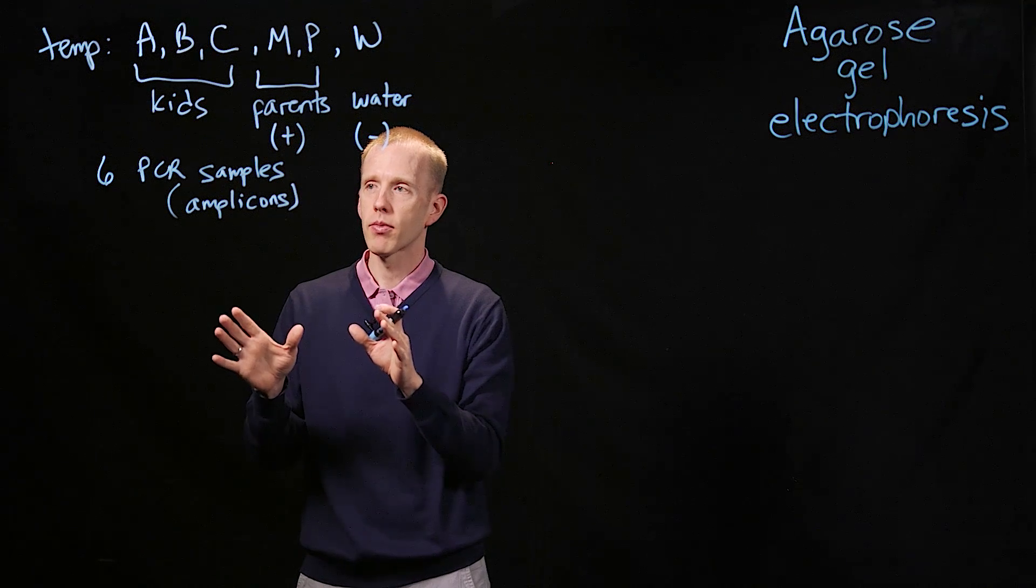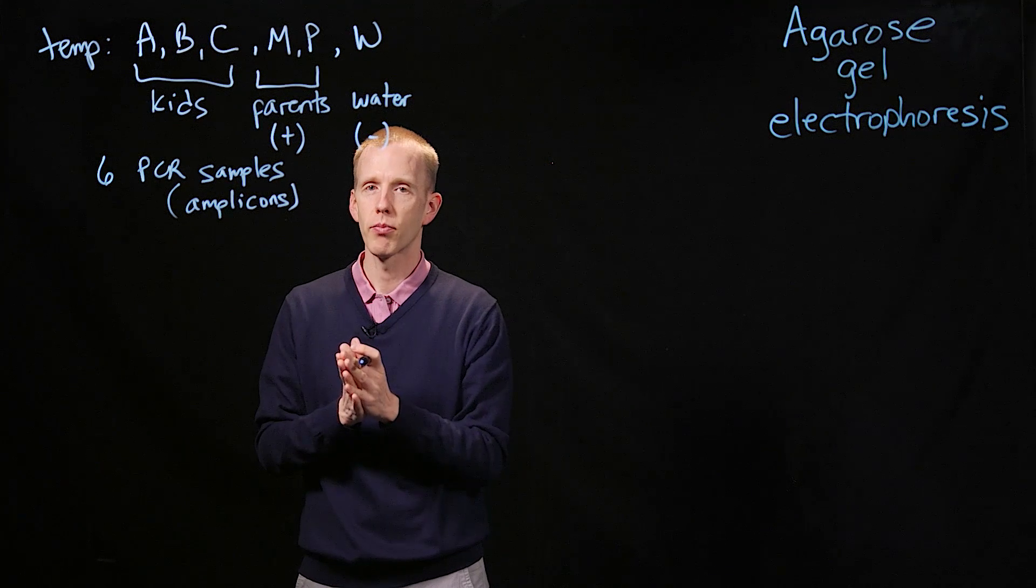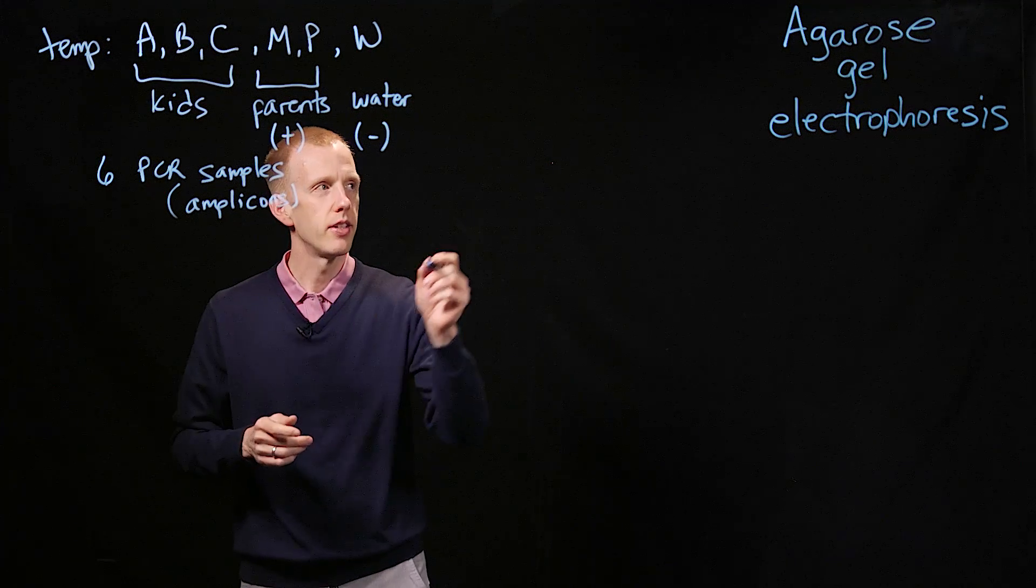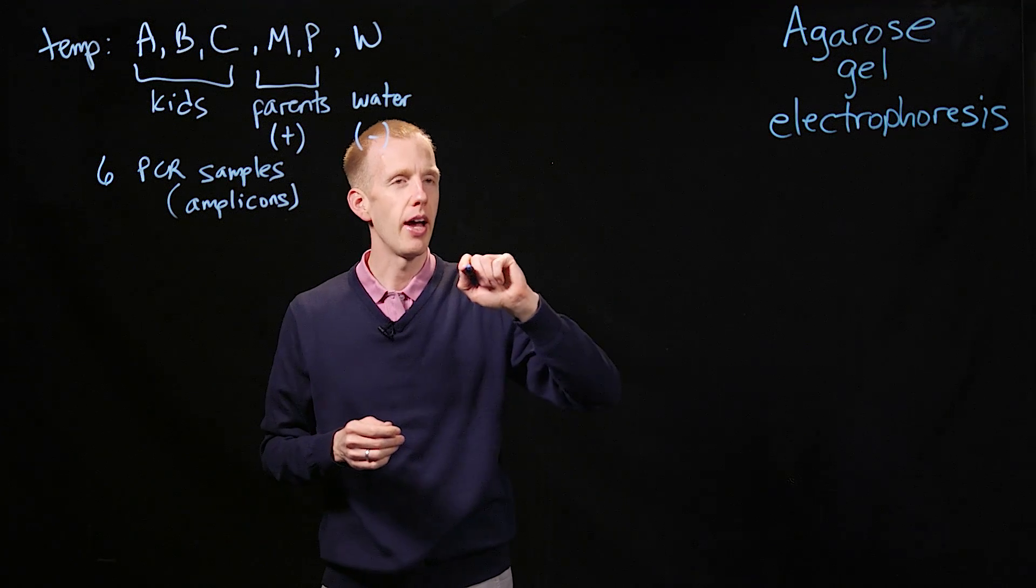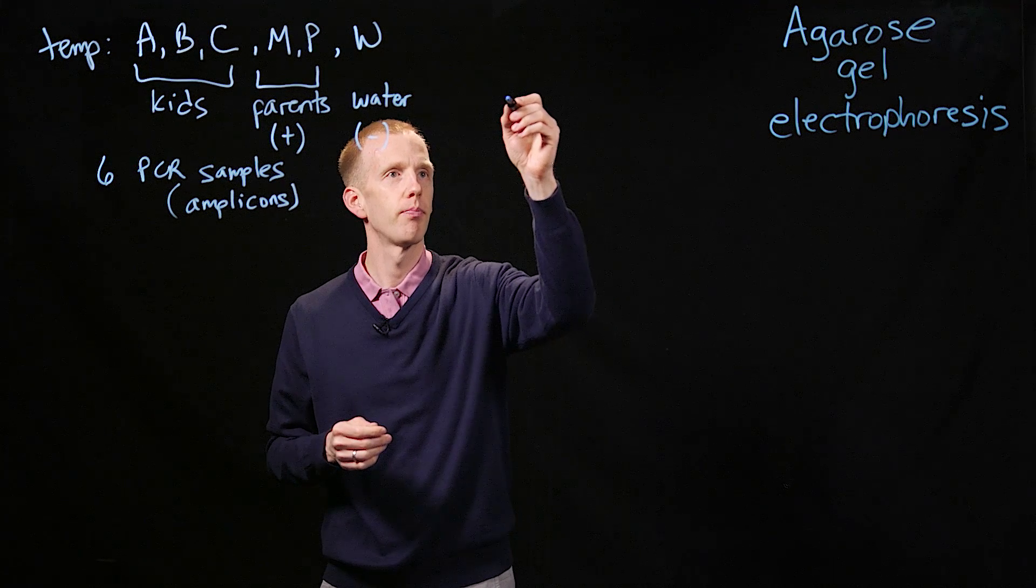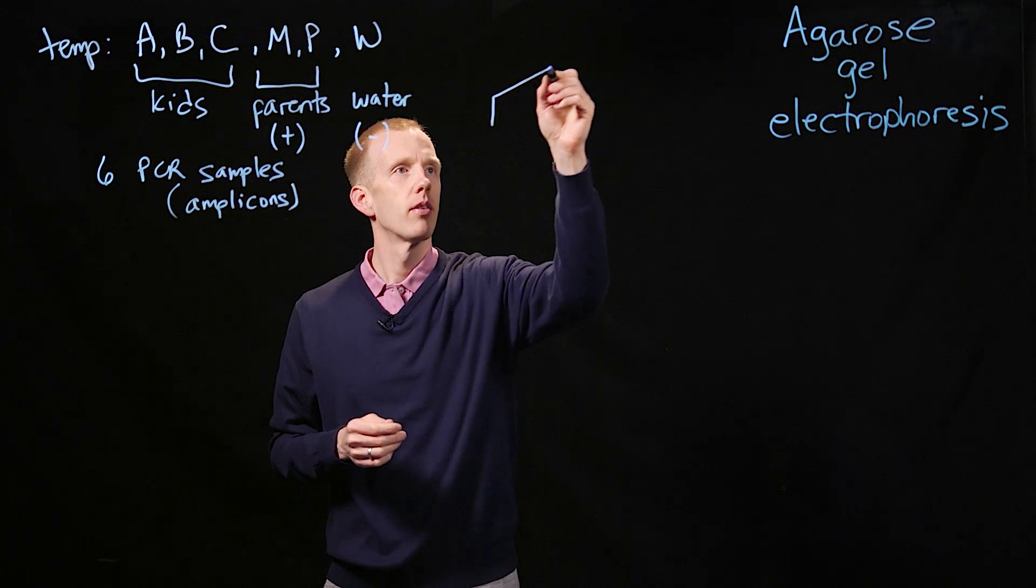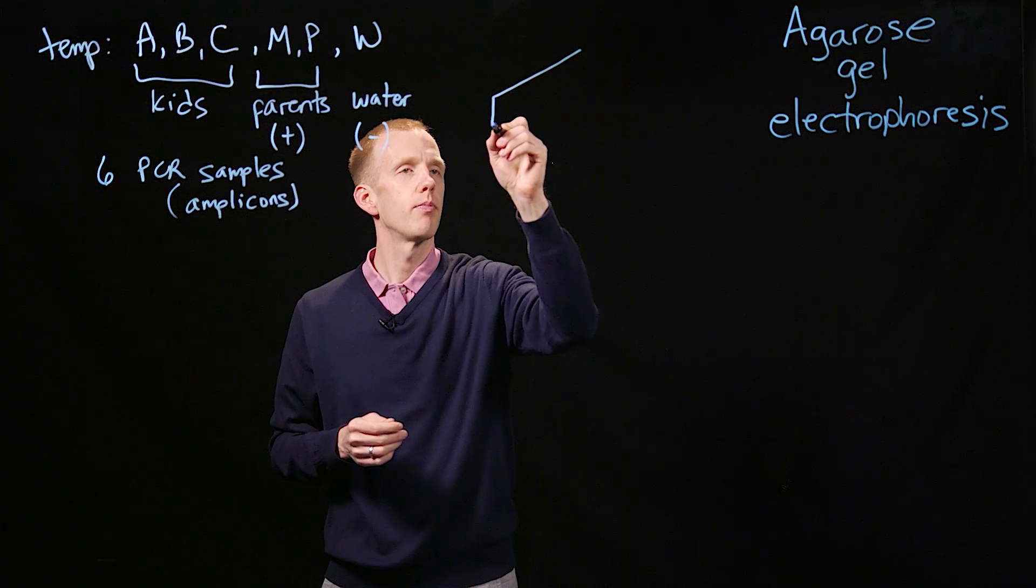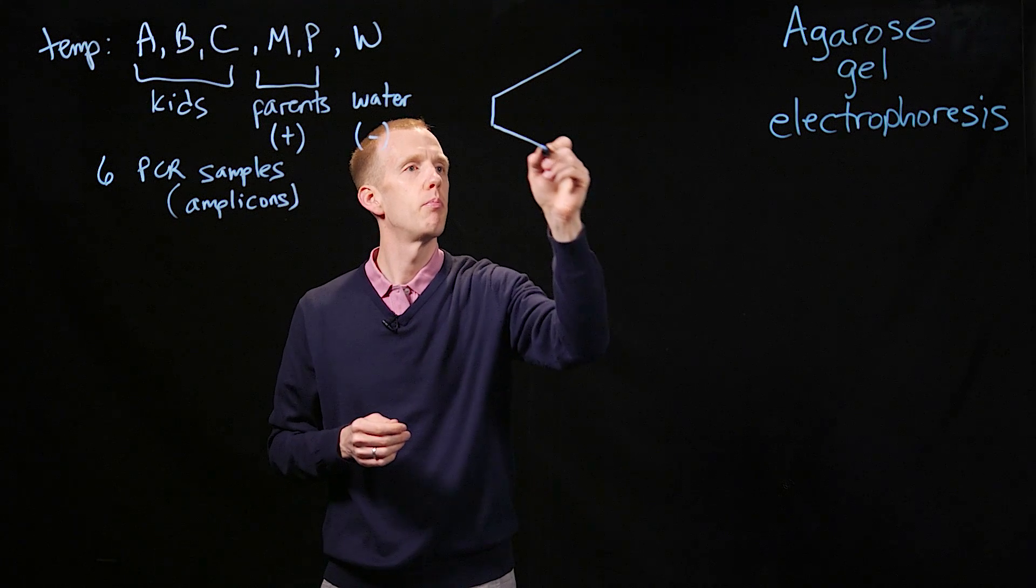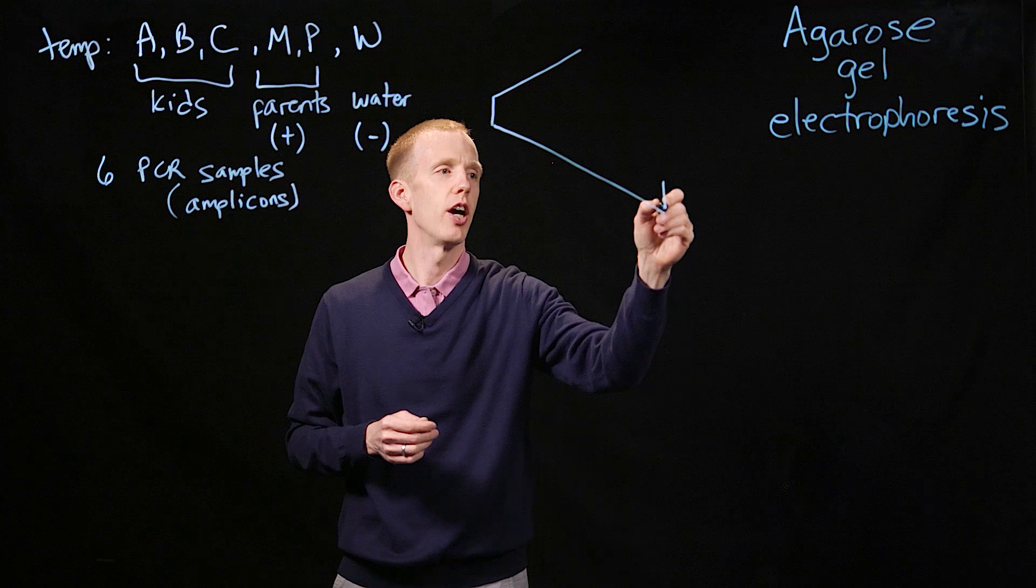When we have PCR samples, amplicons, what the scientist does is analyze them by agarose gel electrophoresis. And what this is, is it's a big slab of what you could think of as jello, essentially.